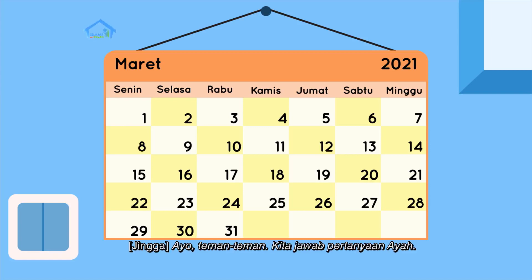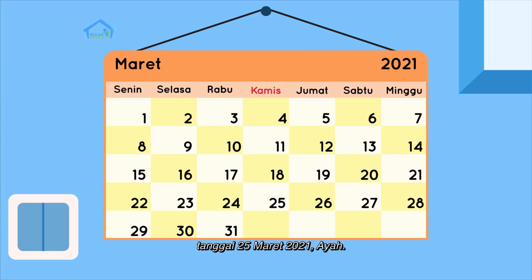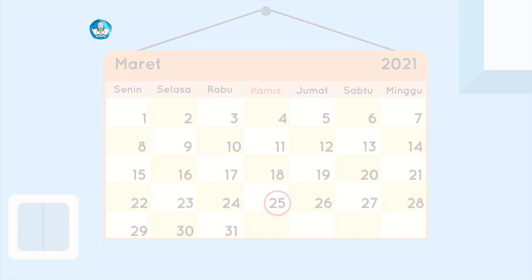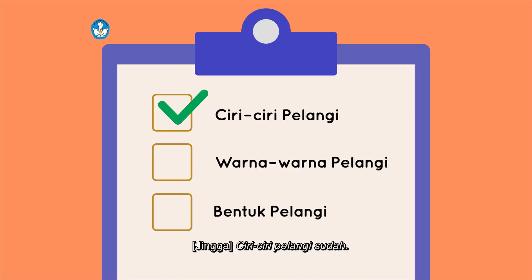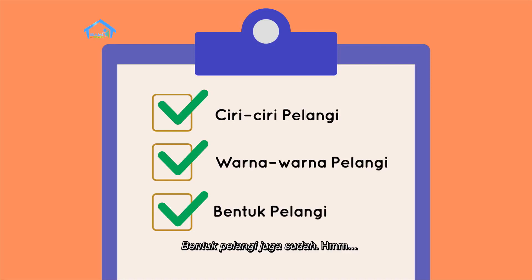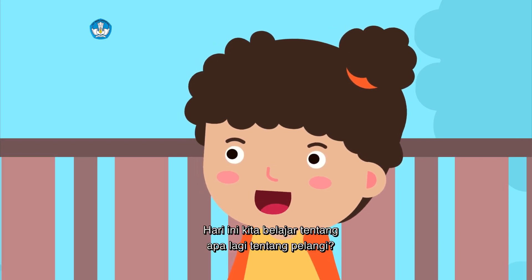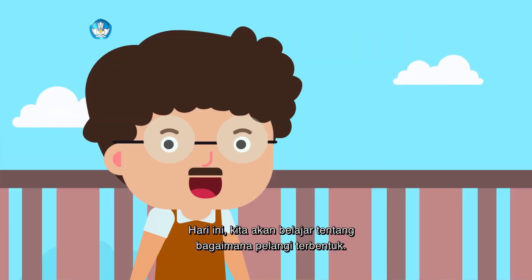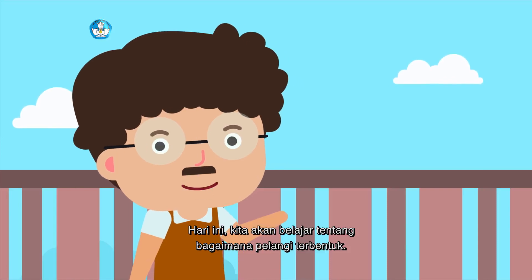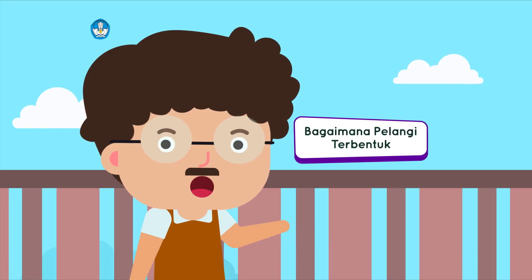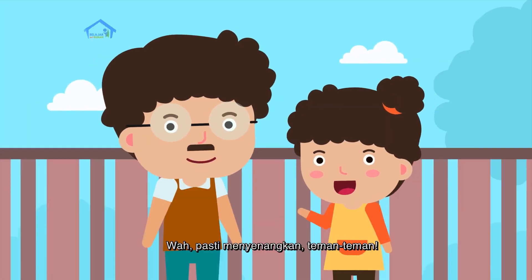Sekarang coba kalian amati kalender yang ada di rumah, sekarang hari apa dan tanggal berapa ya? Sekarang adalah hari Kamis, tanggal 25 Maret 2021, ayah. Benar sekali! Ciri-ciri pelangi sudah, warna-warna pelangi sudah, bentuk pelangi juga sudah. Hari ini kita belajar apa lagi tentang pelangi?